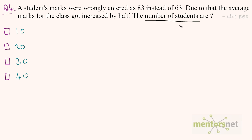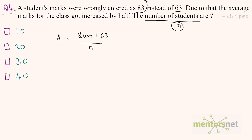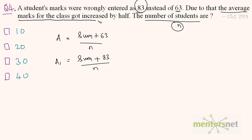Let's say there are n students. When the student's marks are correctly entered as 63, the original average is: a equals (sum of rest of students' marks plus 63) divided by n. When the marks are wrongly entered as 83, the new average a1 equals (sum of rest of students' marks plus 83) divided by n.